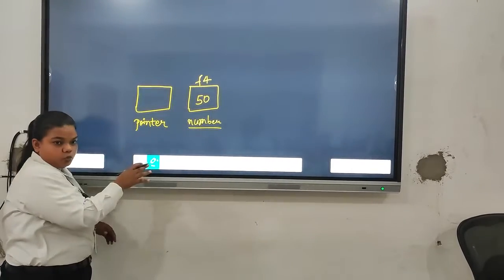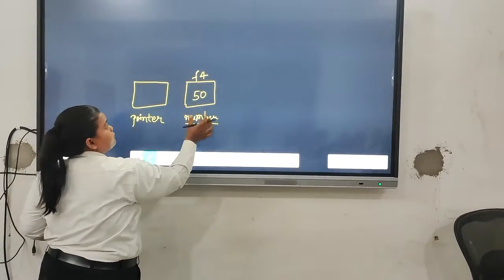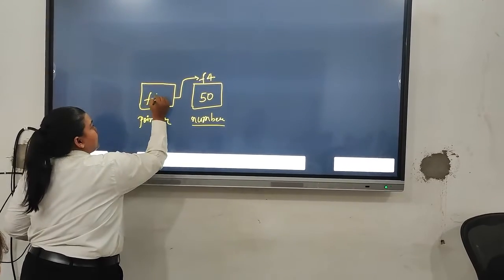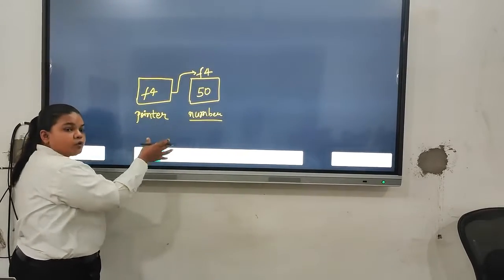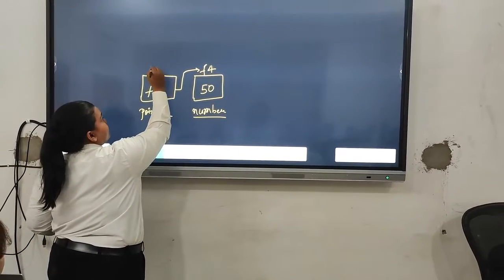Here what will pointer do? Pointer will not store the value. It will store the address of the number variable. Here it will store F4. Its address would be different, but it will store the address of the number variable. It will store, let's say, A4.